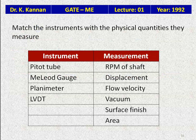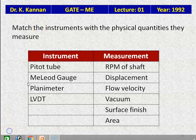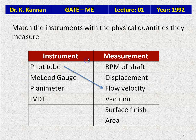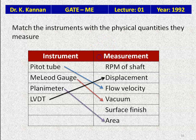Question 15: Match the instrument with the physical quantity it measures. Instruments: pitot tube, McLeod gauge, planimeter, LVDT. Measurements: RPM of shaft, displacement, flow velocity, vacuum, surface area. The pitot tube measures flow velocity. The McLeod gauge measures vacuum pressure. The planimeter measures area. The LVDT measures displacement. RPM of the shaft remains unmatched from this list.